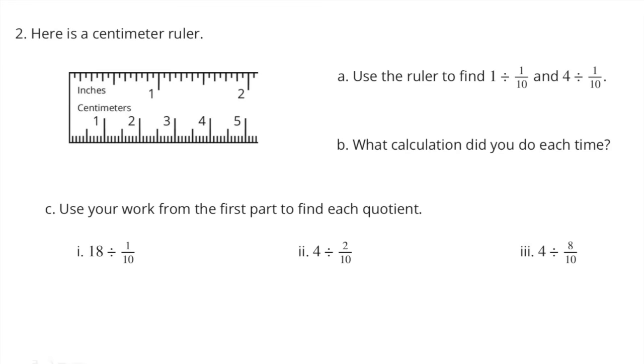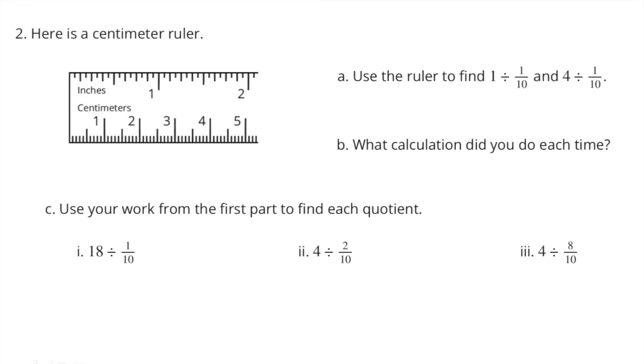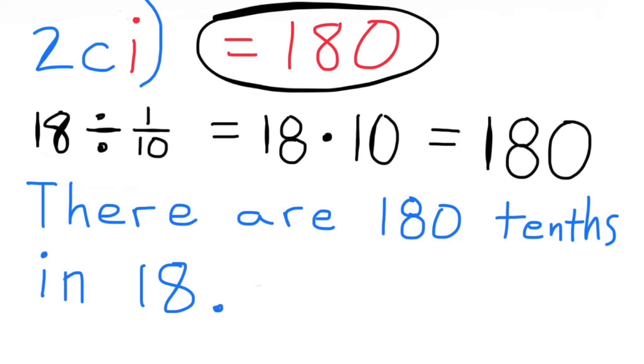Part B: What calculation did you do each time? Each centimeter has 10 millimeters, so I multiplied the dividend by 10 for each of the above problems. Part C: Use your work from the first part to find each quotient. 18 divided by 1 tenth. There are 180 tenths in 18. 18 divided by 1 tenth equals 18 times 10 or 180.